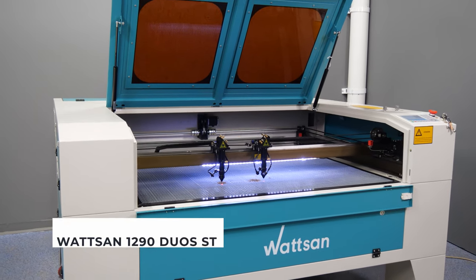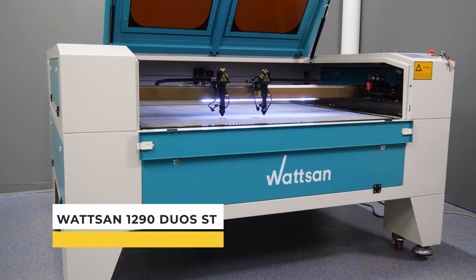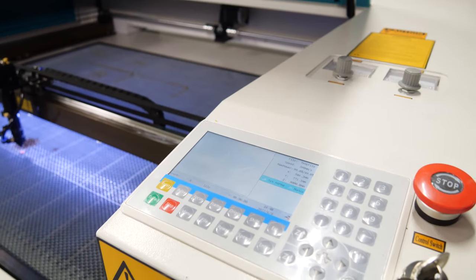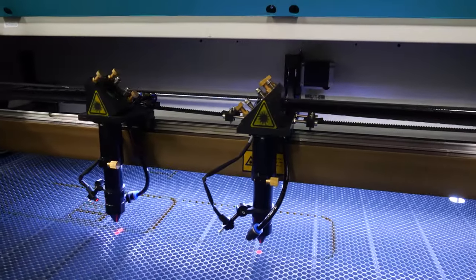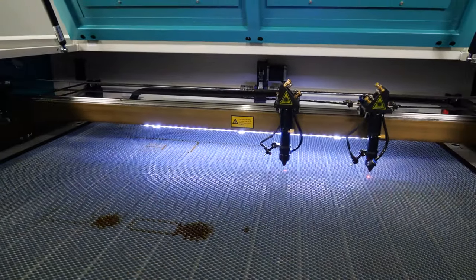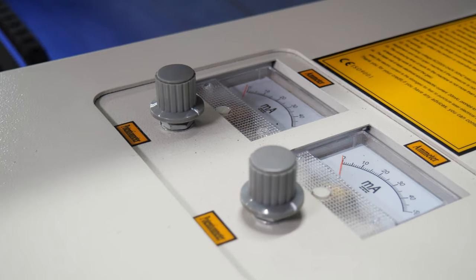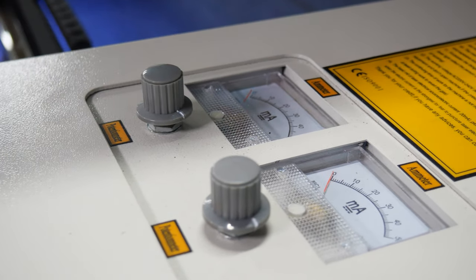The Watson Duos 1290ST is a medium format CO2 laser machine intended for cutting non-metallic materials. Watson machine tools are characterized by a wide range of functions, high operation speed, accuracy, and high quality of cutting even when working round the clock, with reliability and high quality of operation.